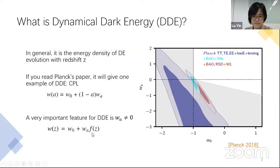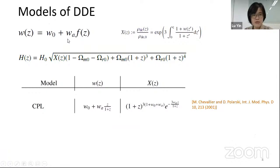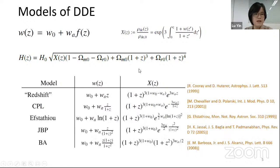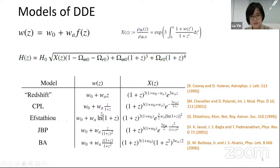We rewrite the equation of state in this form. The CPL model, the simplest dynamic dark energy, can be written as W(Z), and the ratio of dark energy X(Z) corresponds to this. In this work, we also consider four other kinds of dynamic dark energy: the redshift model, CPL model, oscillation model, JPP model, and the BA model. The first two models have a term that can be considered as the first term in the Taylor expansion, while for the other models, this term is the second or later terms in the Taylor expansion.